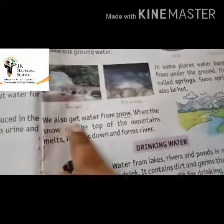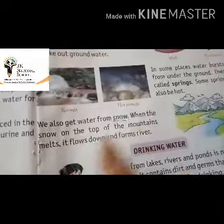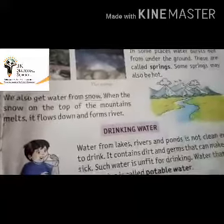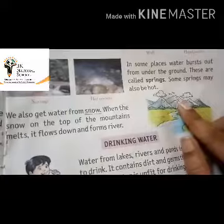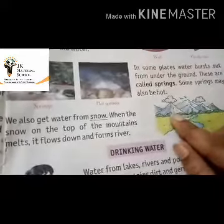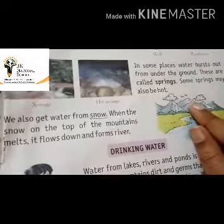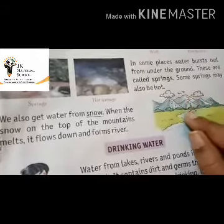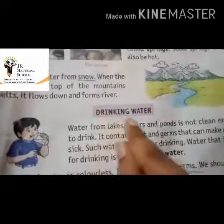We also get water from snow. When the snow on the top of the mountains melts, it flows down and forms a river. Snow on mountains, when melted due to intense heat, forms a river — because melting snow becomes water. So if mountain snow melts, it forms a river.